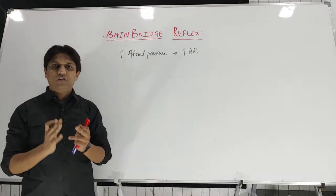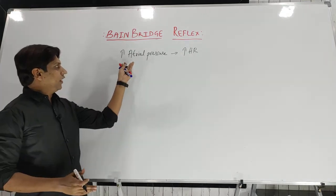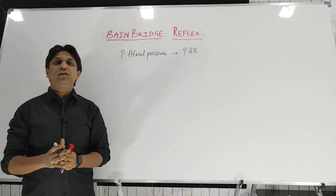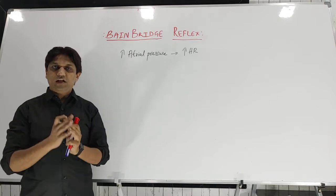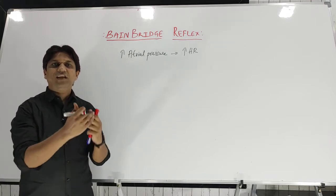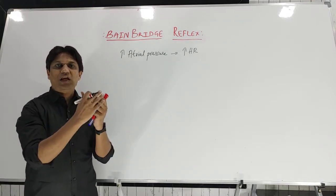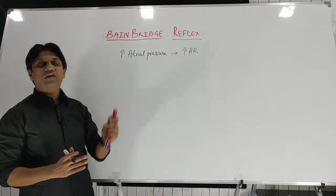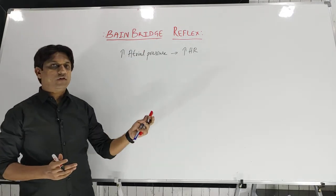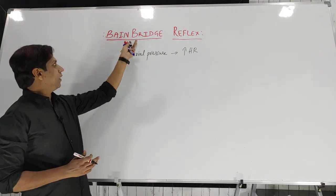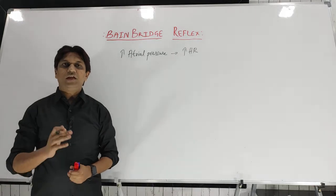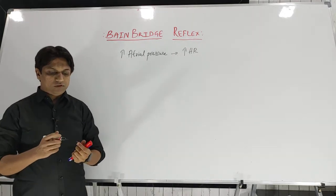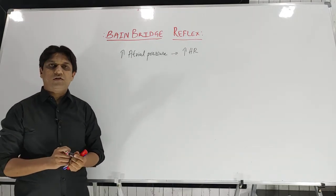The definition of Bainbridge reflex: if there is an increase in the atrial pressure or increase in the central venous pressure, then there is a reflex increase in the heart rate. This phenomenon is known as Bainbridge reflex, discovered by Arthur Bainbridge in the year 1918 after his experiments on anesthetized dogs.